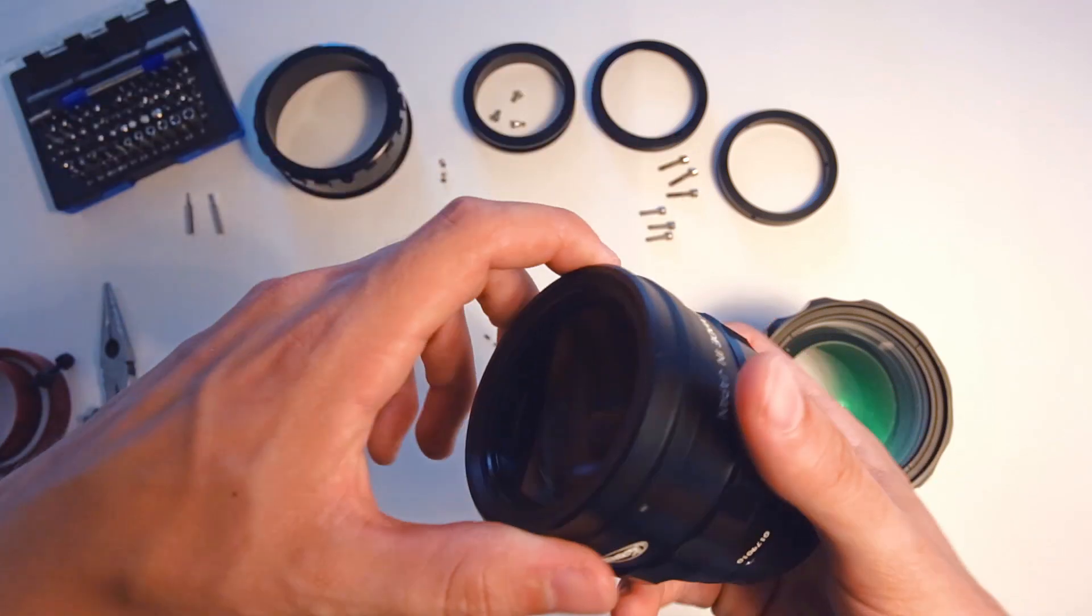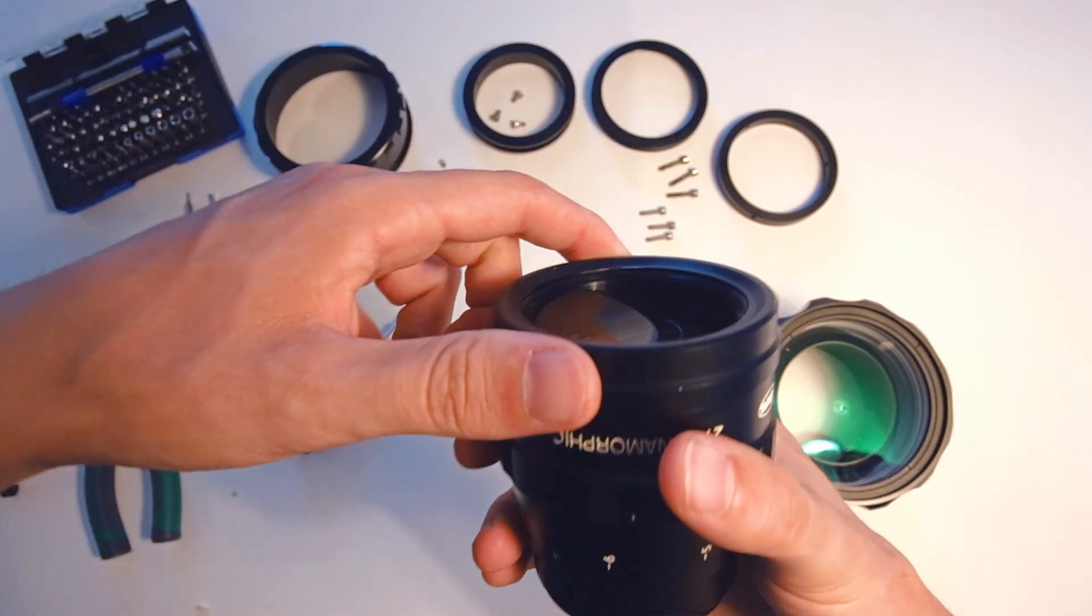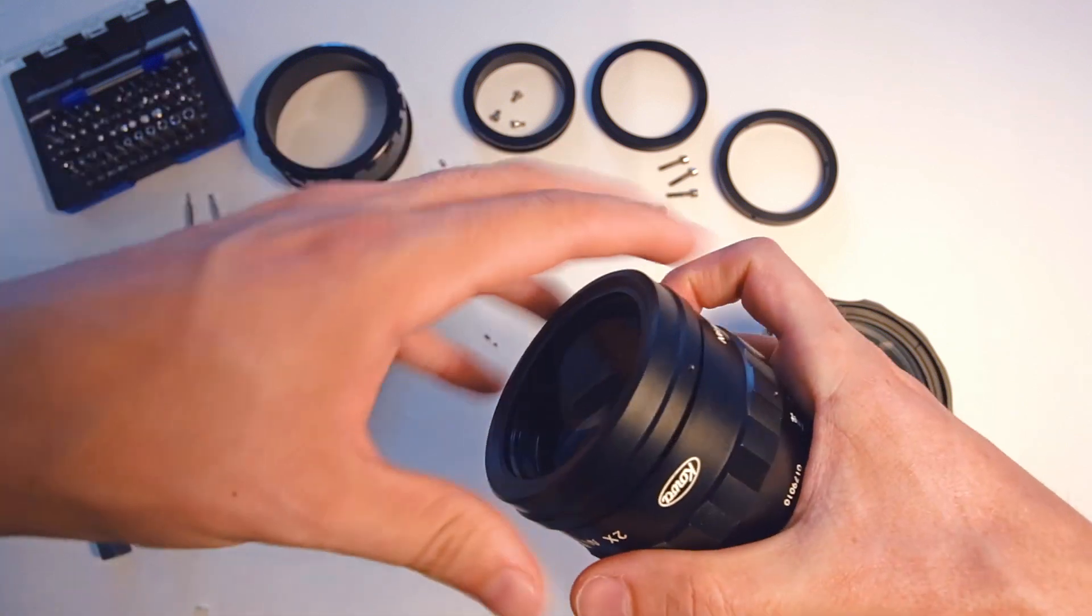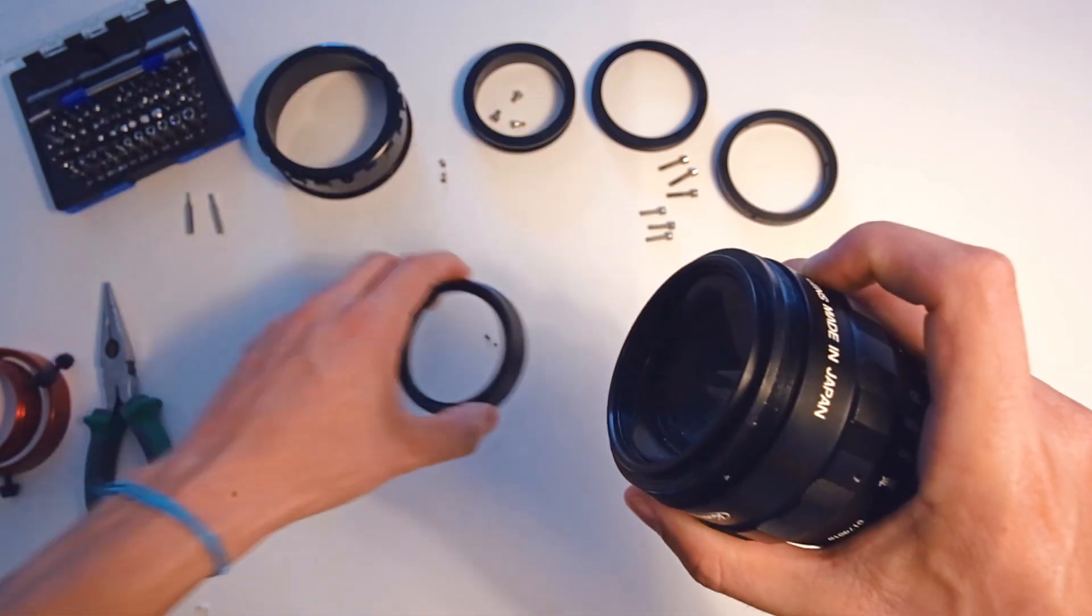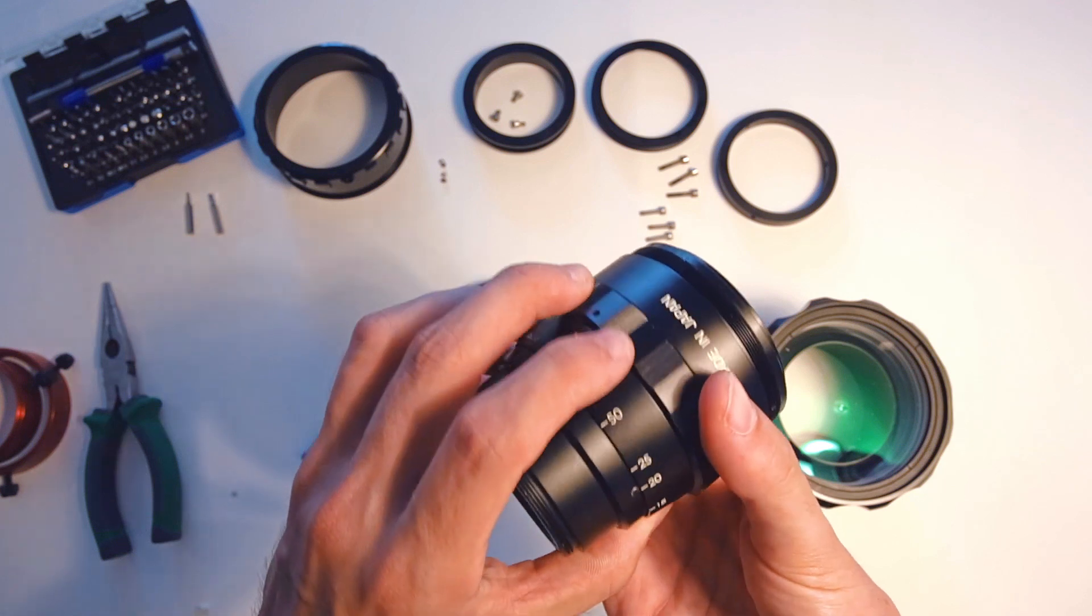Then, turn the stop ring counterclockwise to remove it. Store it safely along with the screws. Okay.